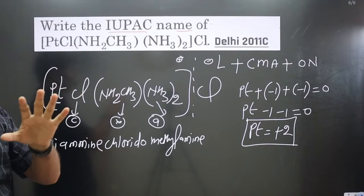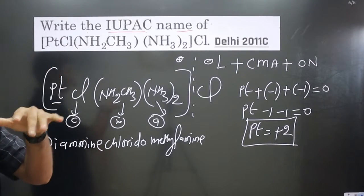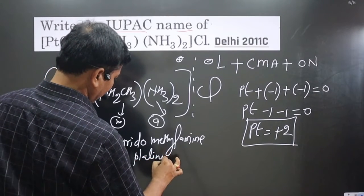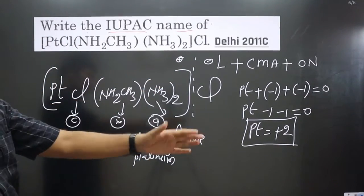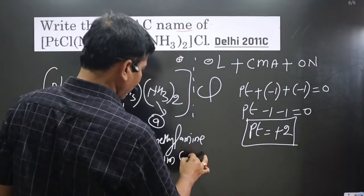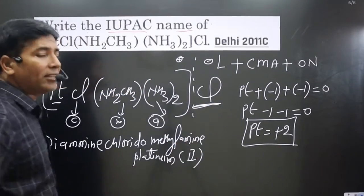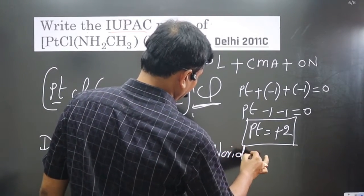After this we have the central metal atom. We use the common name because it's present in the cationic complex, so we write platinum. Next we have the oxidation number already calculated, written in Roman numerals: two. After that in the last we have the counter ion, which is chloride - you cannot write chlorine, it is chloride.